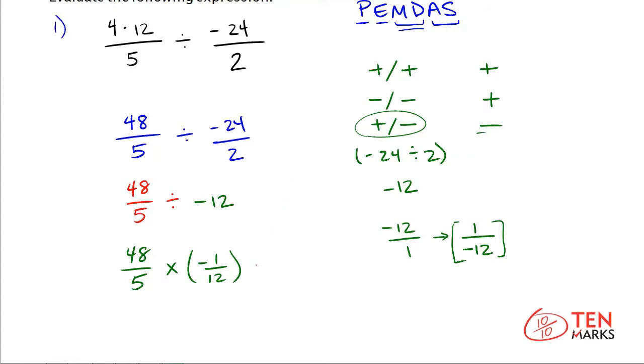Multiply the fractions by finding the product of the numerators, so you have 48 times negative 1. Again you have positive times negative, the answer is going to be negative, so you get negative 48 on top. And on the bottom you have 5 times 12, which is a product of 60, so you get 60 on the bottom.